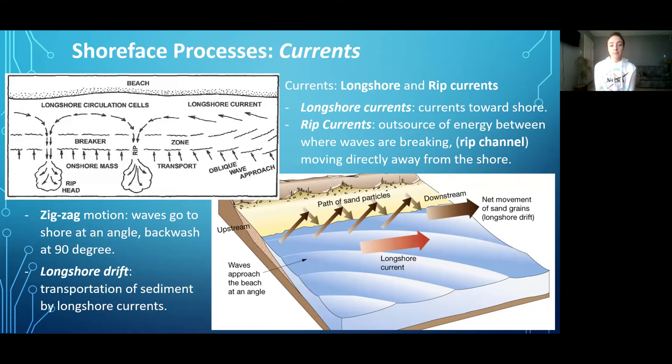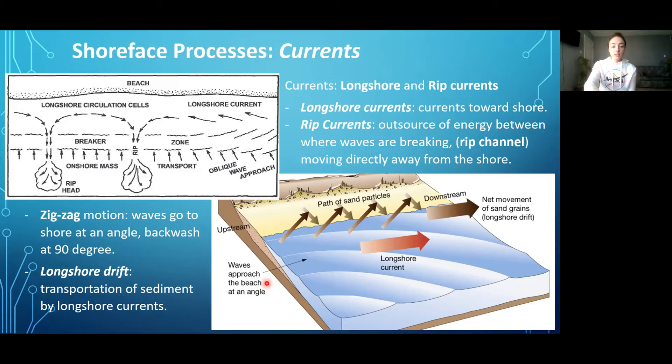Next, we have currents. Currents can be longshore currents and rip currents. Longshore currents go roughly toward the shore, and rip currents represent an outflow of energy moving directly away from shore. We're going to focus on longshore currents because they cause a type of deposition called longshore drift. Because longshore currents typically approach the shore at an oblique angle, this causes a zigzag motion of sand particles and the directional migration of sand particles along a shoreline.